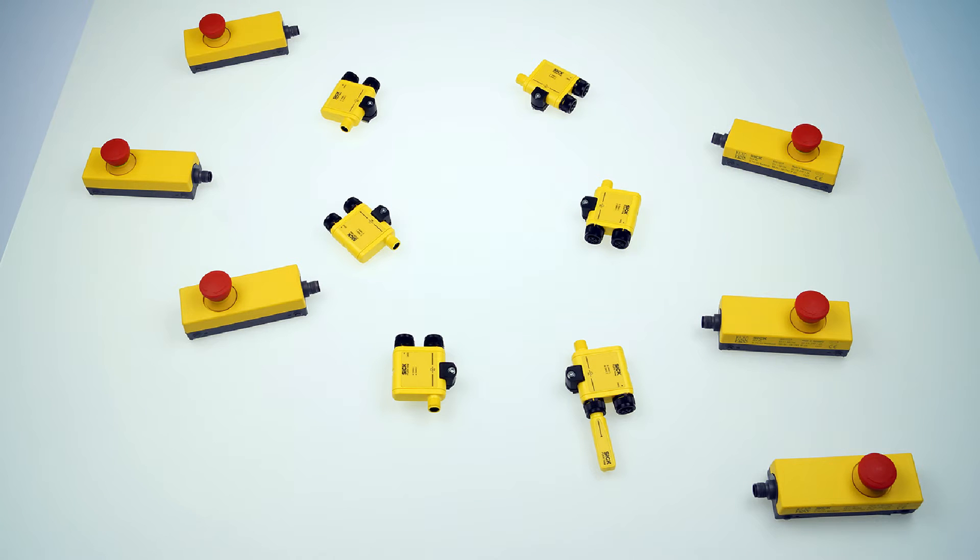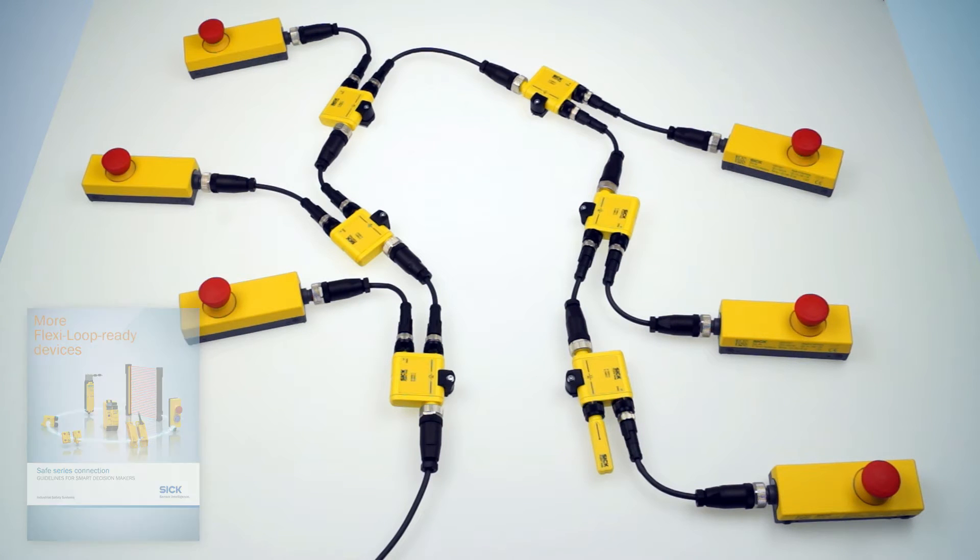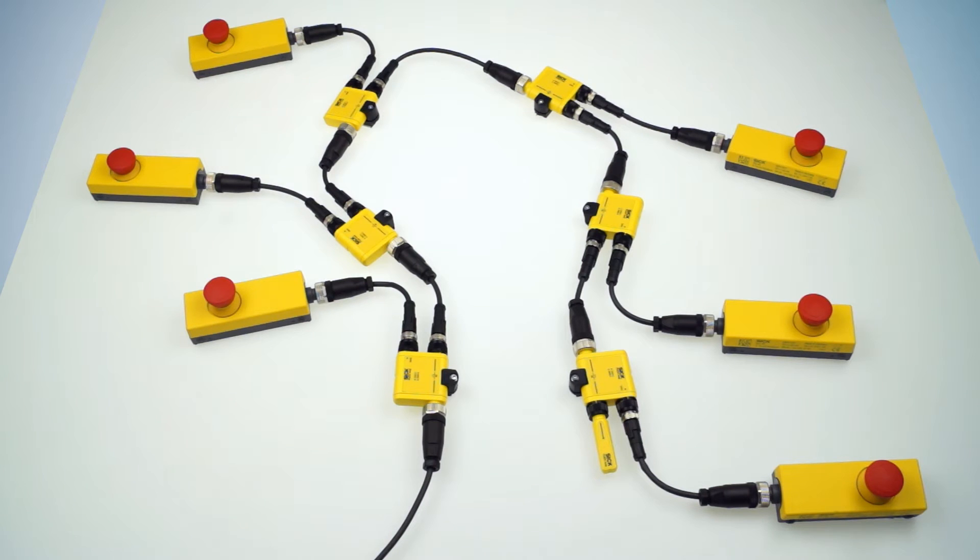At first we are setting up an e-stop series connection using our FlexiLoop ready devices for easy plug and play. Without the Diagnostic or Masternode there was no easy way to check the series connection right after mounting it. And now with our two new FlexiLoop nodes there is one.